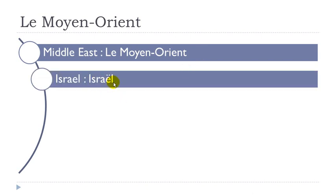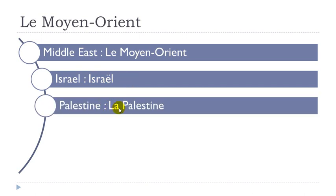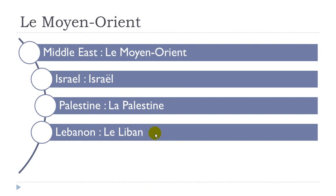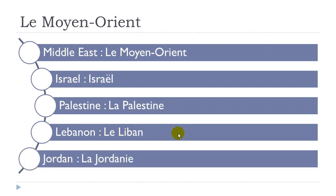Let's start now. Israël. La Palestine. Le Liban. La Jordanie. Okay, so let's repeat them one more time: Le Moyen-Orient, Israël, La Palestine, Le Liban, La Jordanie.